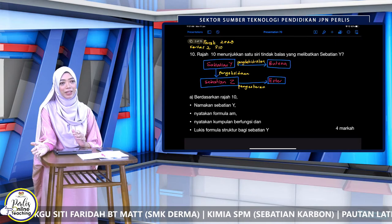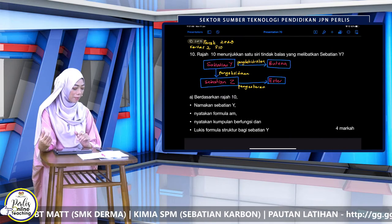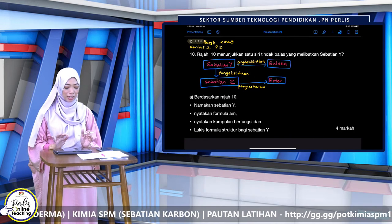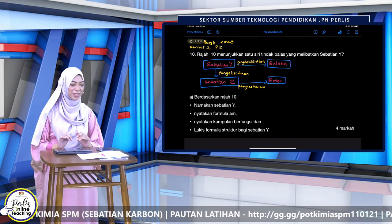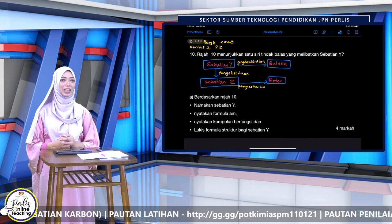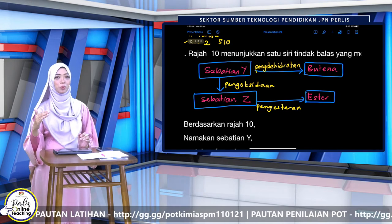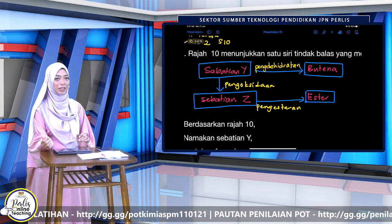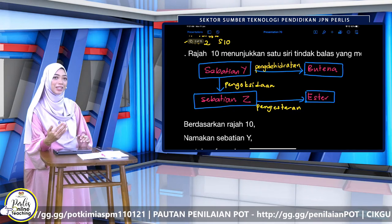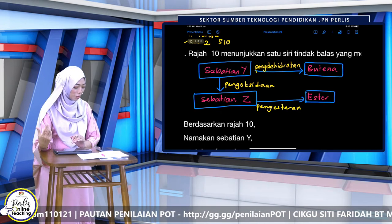Sebenarnya dalam kertas 2, bahagian struktur, soalan yang melibatkan sebatian karbon dia suka lukis diagram yang dia campur-campurkan tindak balas tu. Masa tadi awak belajar satu-satu kan, tapi dalam soalan dia relatekan beberapa tindak balas — macam main puzzle. Cikgu suka sangat soalan sebatian karbon sebab dia macam berteka-teki. Sebatian Y melalui penyahhidratan jadi butena. Jadi apakah sebatian Y? Sebatian Y melalui pengoksidaan jadi sebatian Z. Z pula melalui pengesteran jadi ester.